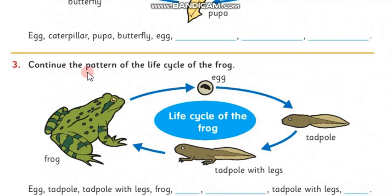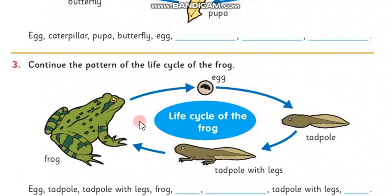Just like the butterfly, the frog also has a life cycle. The frog's life cycle starts as an egg — or frog spawn as we call it — then a tadpole, then a tadpole with legs, and then a frog. Fill in the missing parts of the pattern going around the life cycle. We have egg first, then tadpole, tadpole with legs, frog — and what comes next? There's more information on the life cycle of a frog on Google Classroom in a PowerPoint, so feel free to look that up. Enjoy discovering these patterns and working on them.